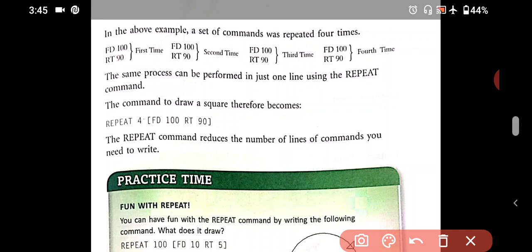This is square bracket. I will show you. This one is square bracket. You understand? Yes, this is square bracket. 4, space, then square bracket. FD space 100, space, RT space 90, and bracket over. This is square bracket.